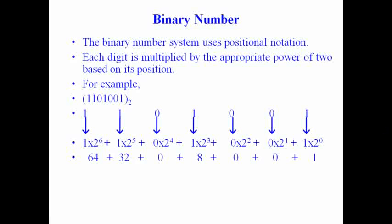So 2 raised to the power 6 is 64 — 64 × 1 = 64. 2 raised to the power 5 is 32 — 32 × 1 = 32. 2 raised to the power 4 is 16 — 16 × 0 = 0. 2 raised to the power 3 is 8 — 8 × 1 = 8. 2 raised to the power 2 is 4 — 4 × 0 = 0. 2 raised to the power 1 is 2 — 2 × 0 = 0. And 1 × 2 raised to the power 0 = 1. Adding these, we convert binary to decimal — the result is 105 in decimal.